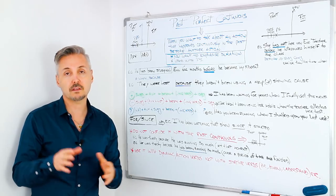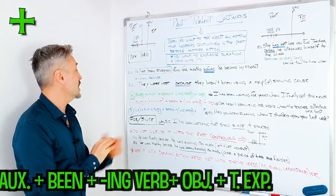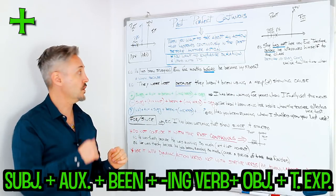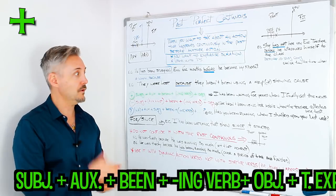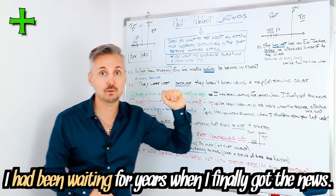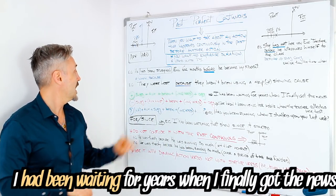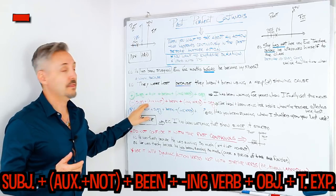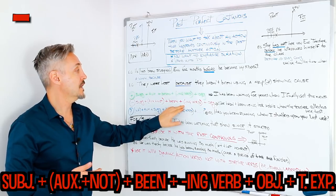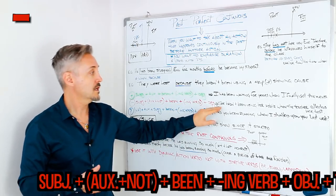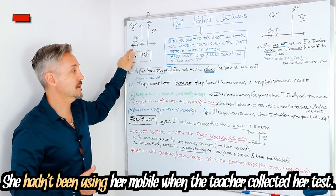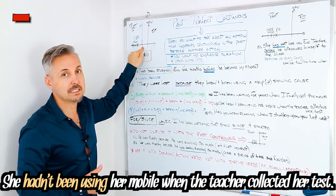The three different formulas: for a positive sentence, we use subject + auxiliary 'had' + 'been' + ING verb + object. For example: 'I had been waiting for years when I finally received the news.' For a negative sentence, we use subject + auxiliary + 'not' + 'been' + ING verb + object. For example: 'She hadn't been using her mobile when the teacher collected her test.'